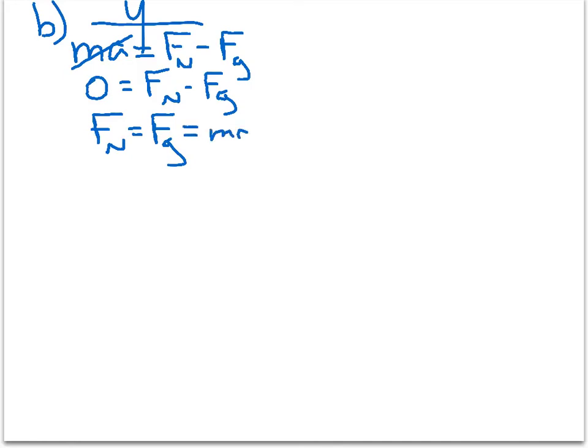So we know Fg equals mg. So we can plug that in. Mg is going to be 900 kilograms times 9.8 meters per second squared, which will give us a normal force of 8820 newtons.